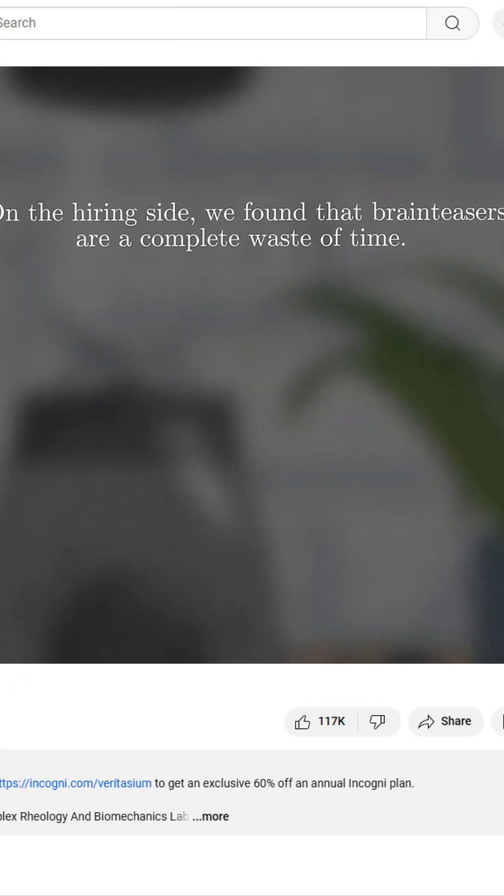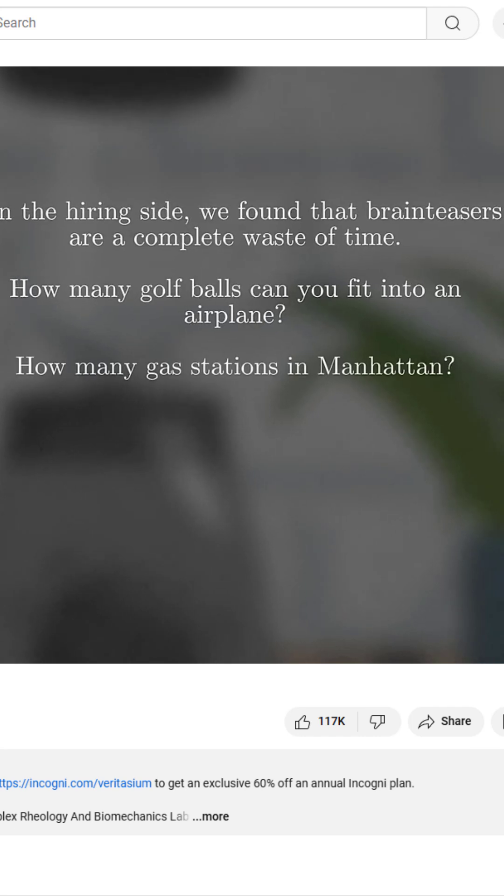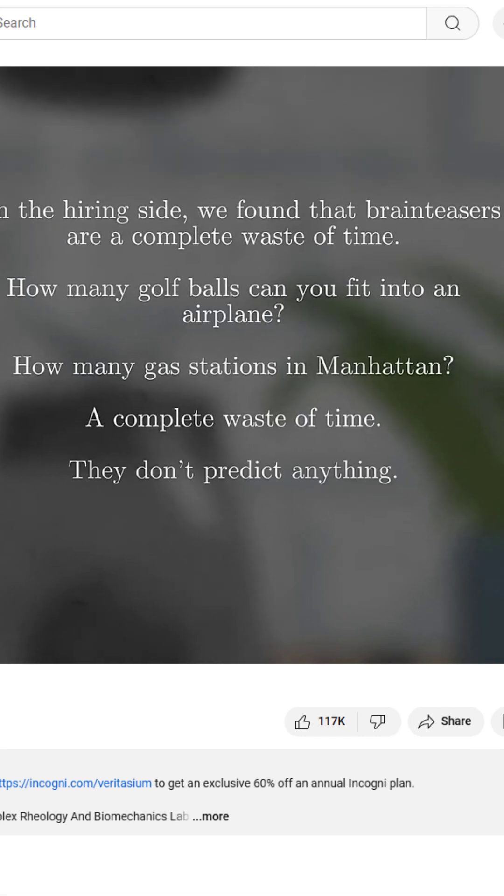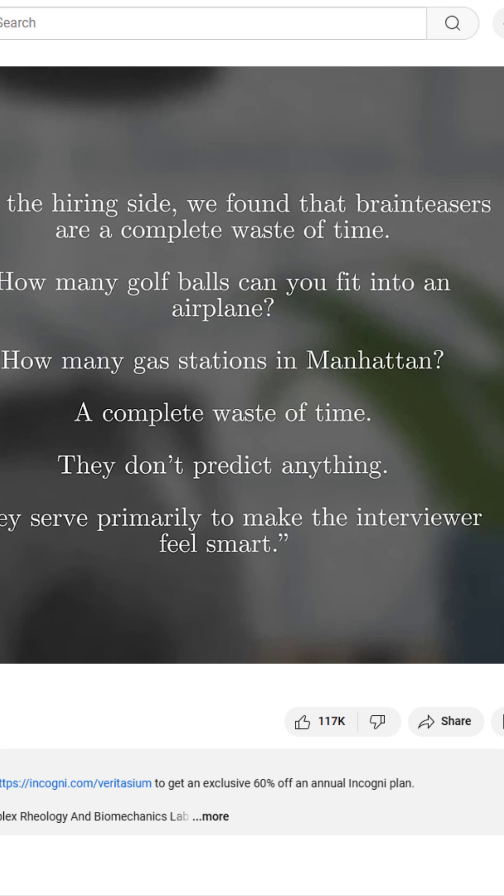And even though Google pretty much admitted that brain teaser questions like this are useless in interviews, it's still a really interesting physics problem and I wanted to propose a different solution. Since you're so small, could you use your shirt like a parachute and ride out on any updraft created by the spinning blades?